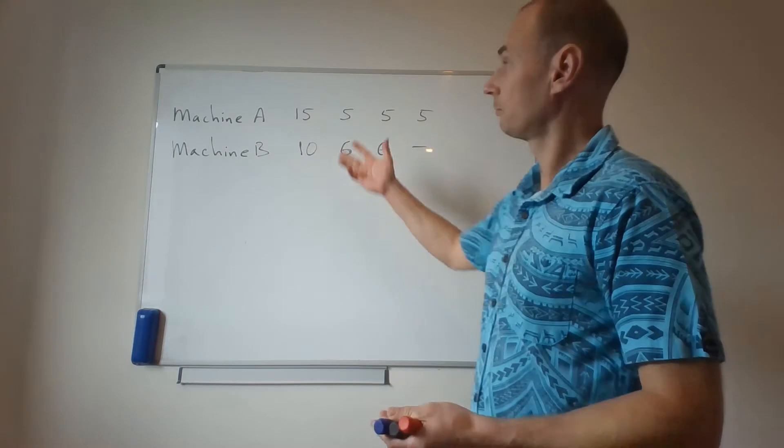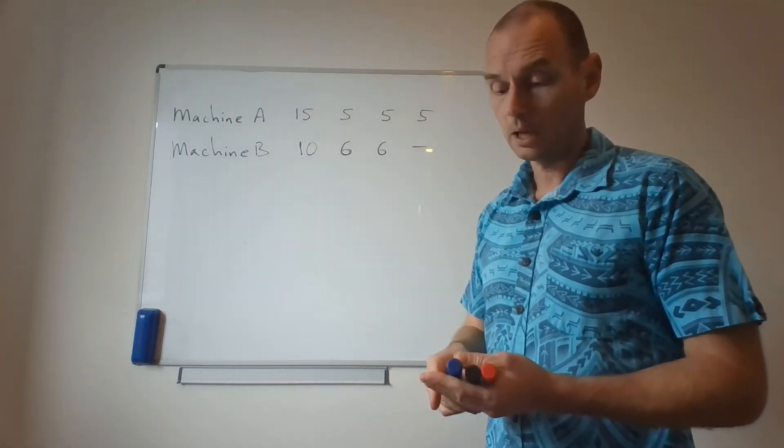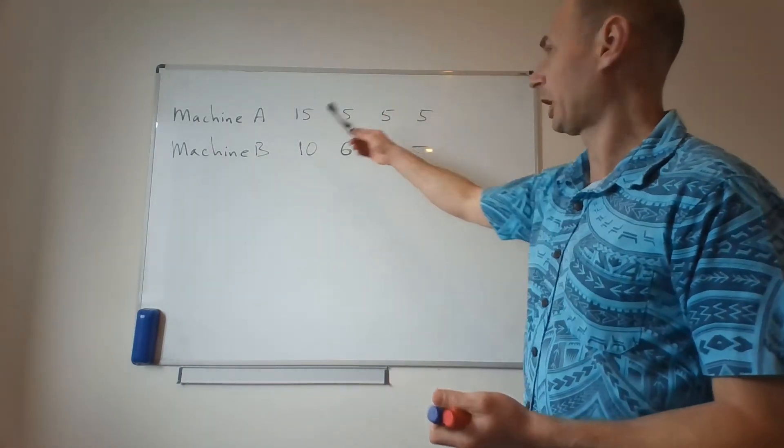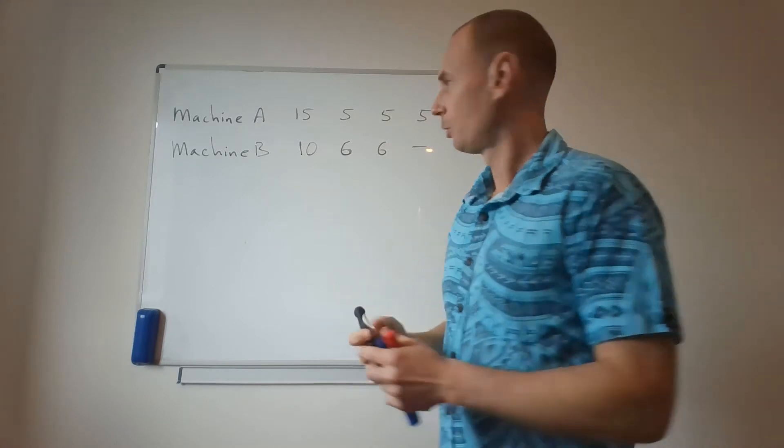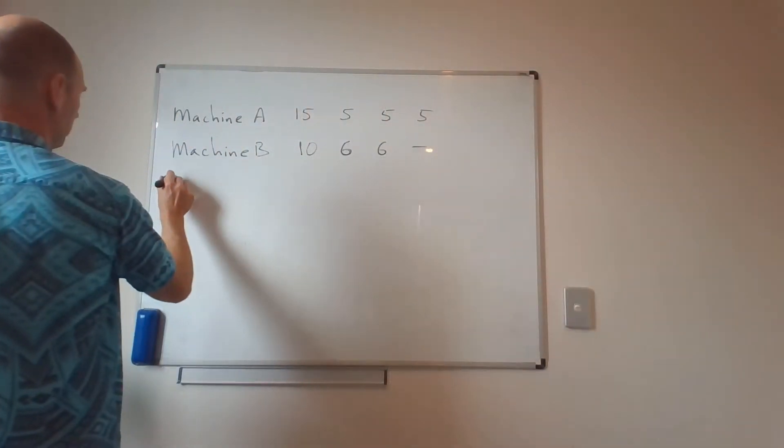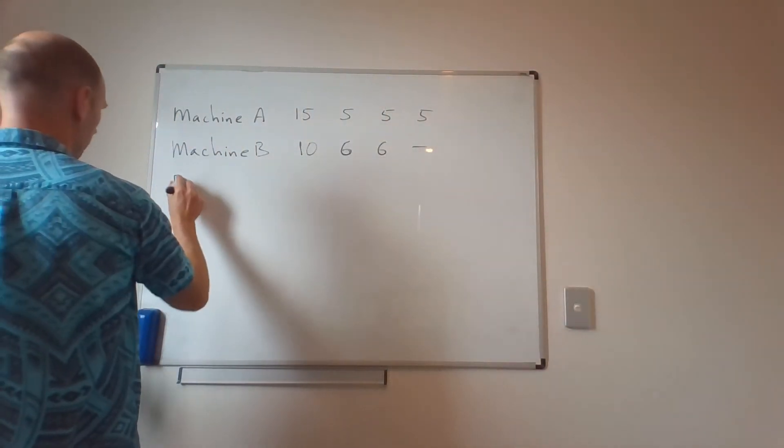The question now is which machine do we choose. And also, since all the cash flows need to be discounted, we assume a discount rate of 6%. I'm just using a textbook example.